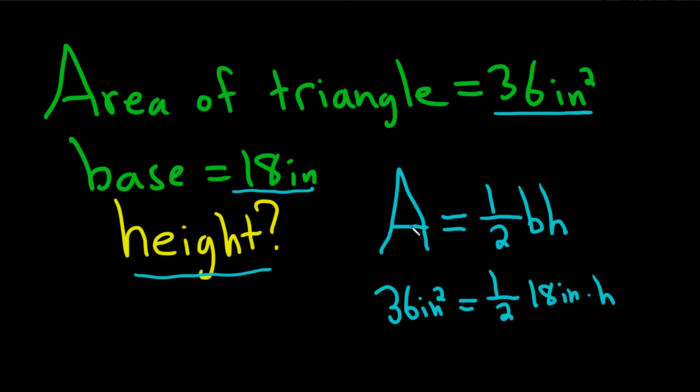So again, just plug in the 36 for your area, plug in the 18 for your base, and then, oh look at this, 2 goes into 18 nine times, so 36 inches squared is equal to 9 inches times our height.